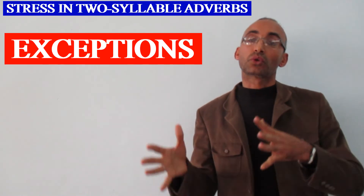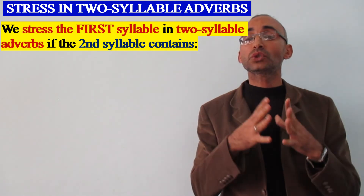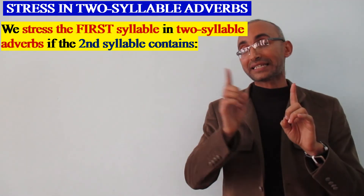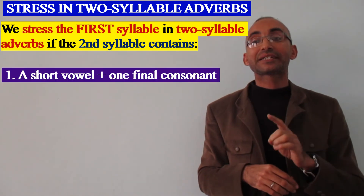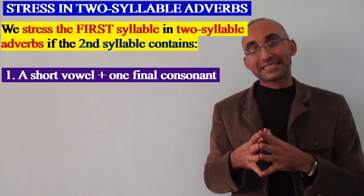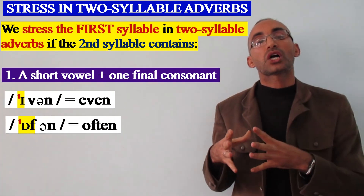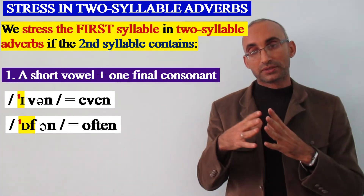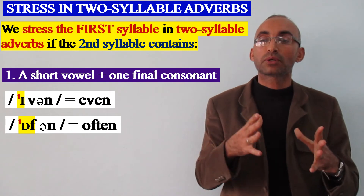We have also a second rule, which says that in two-syllable simple adverbs we stress the first syllable — not the second — when the second syllable contains a short vowel plus one final consonant. This is nearly the same rule as for verbs, as shown here on the board — we stress the first syllable.